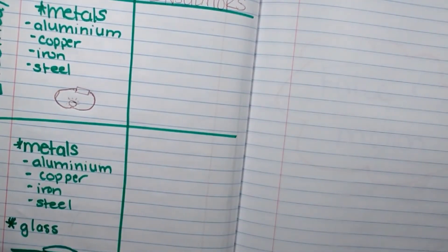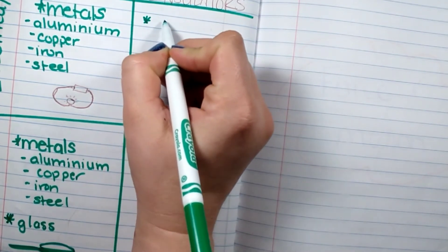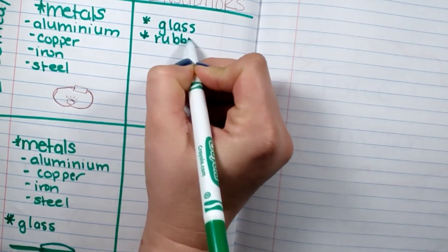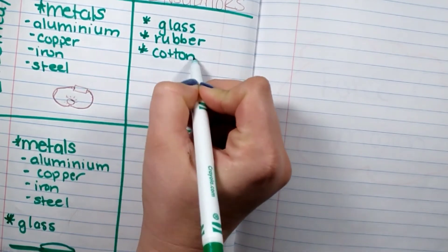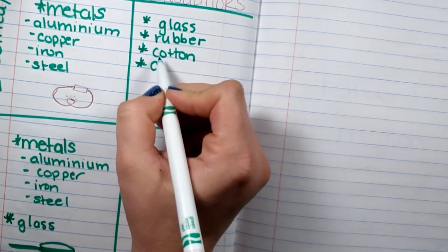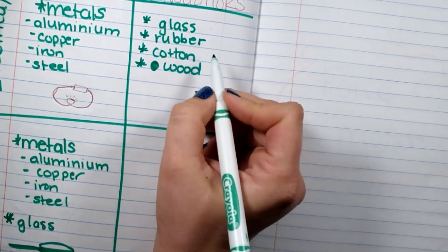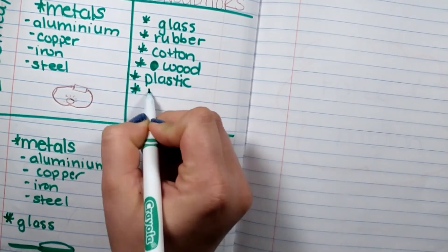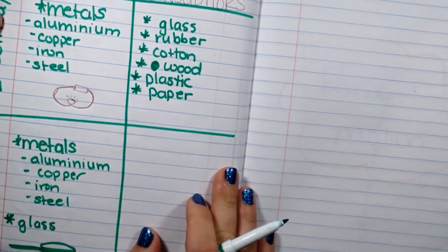Alright, so now we're going to talk about insulators, and we're talking about electrical. So these are things that will stop electrical current. We have glass, rubber, cotton - you'll see electrical wires covered in rubber - wood. That will stop the flow of electricity from going outside of the wire. So if you touch it, it won't hurt you. Plastic, paper. Those will all stop the flow of electricity.